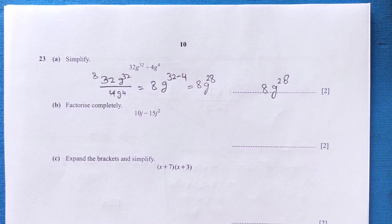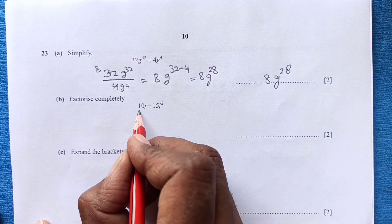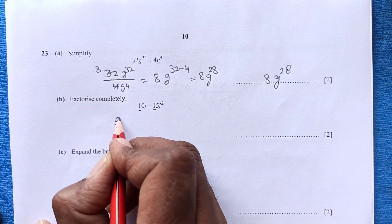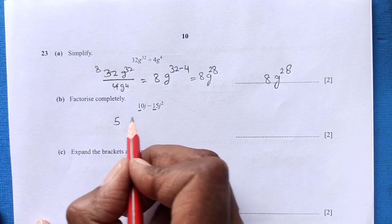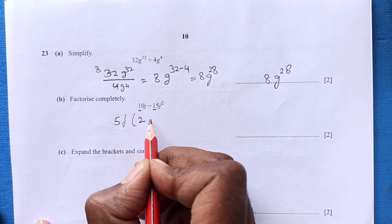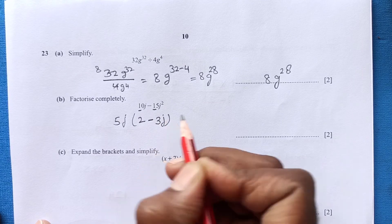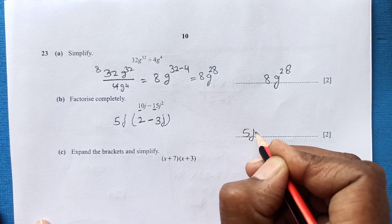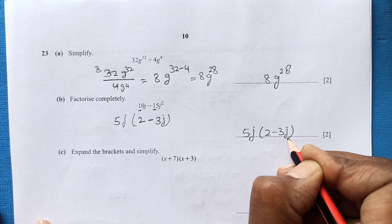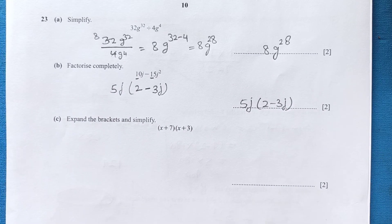Part (b): Factorize. Looking for common factors: 5 is common to both terms, and j is common. So the factorization is 5j(2 − 3j).